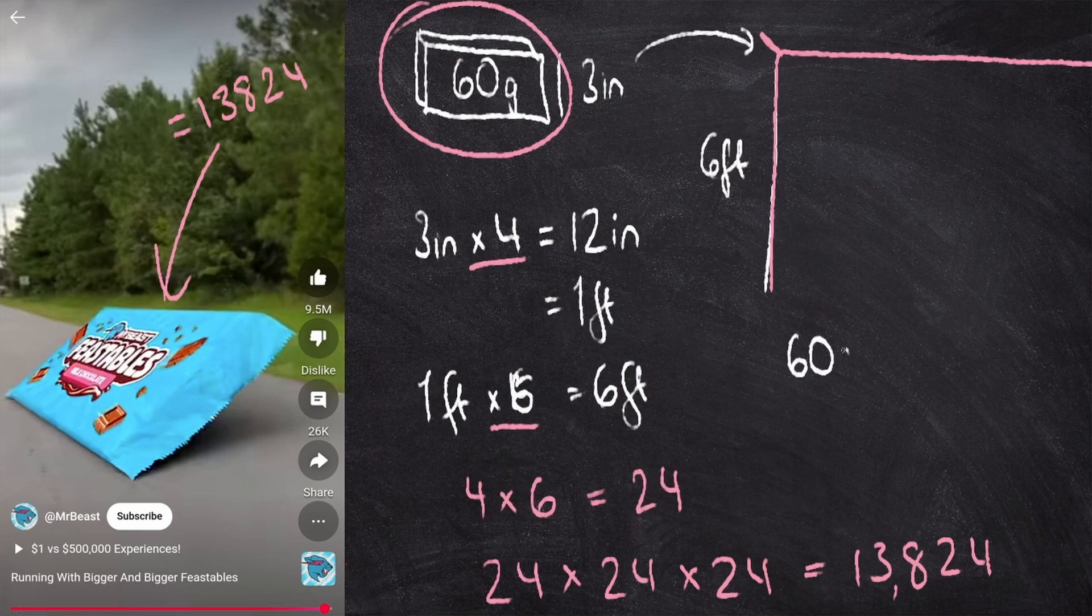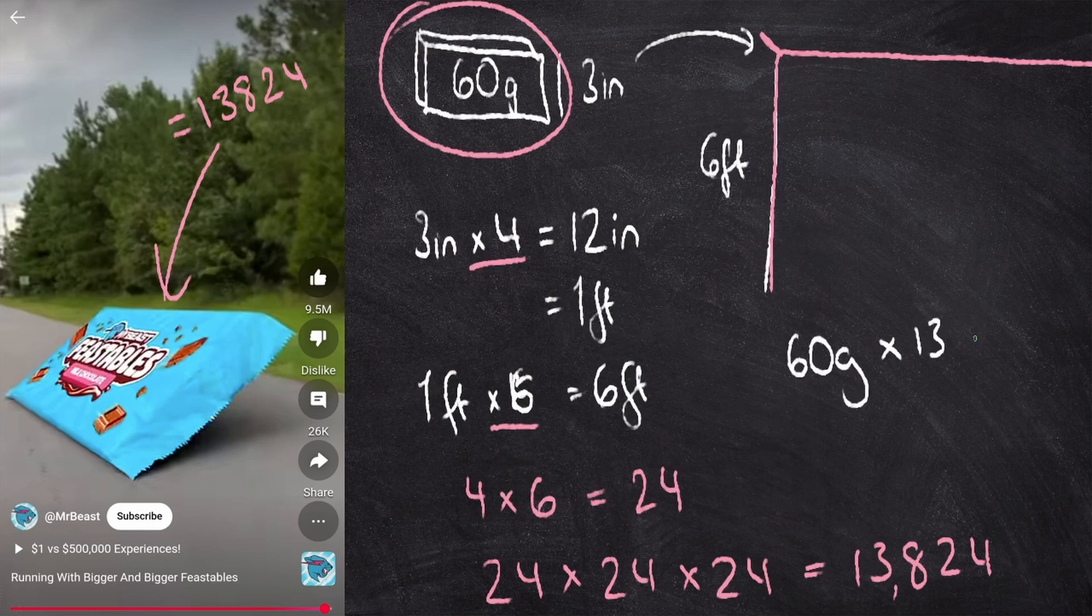we just need to multiply 60 grams by 13,824. And that's where we get the result that this massive chocolate bar weighs 829,440 grams or around 830 kilograms.